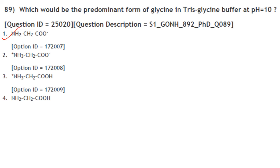What would be the predominant form of glycine in a glycine buffer at pH 10? At high pH it will be the anionic form — the glycinate anion: NH₂–CH₂–COO⁻.